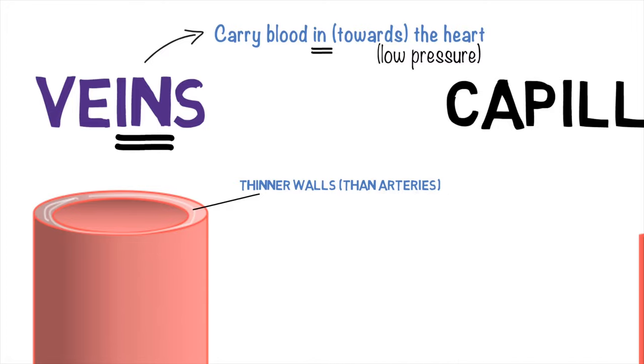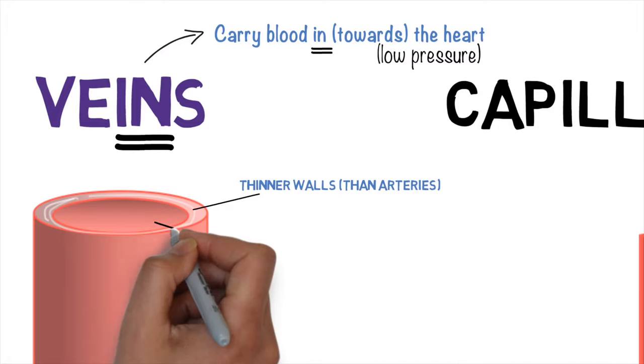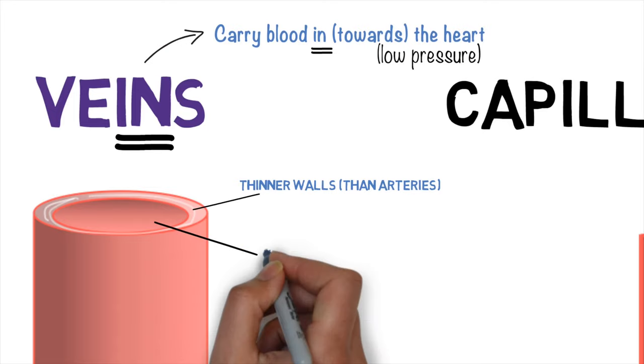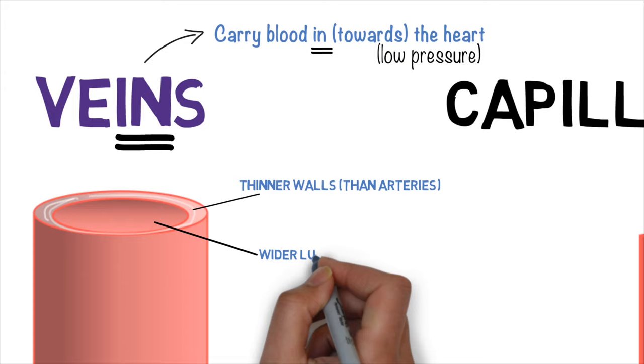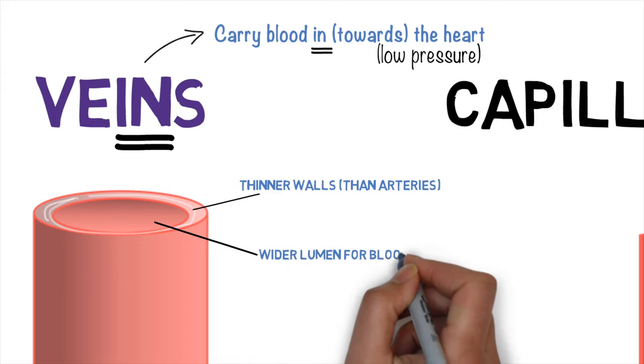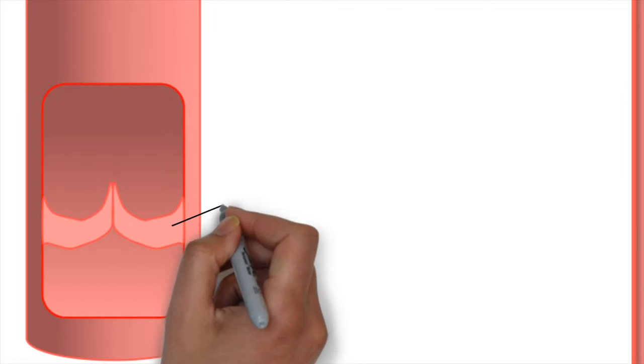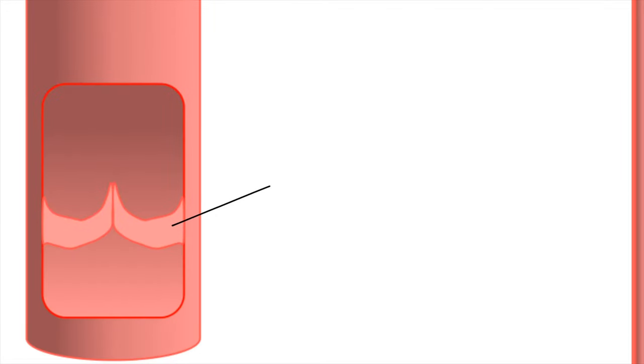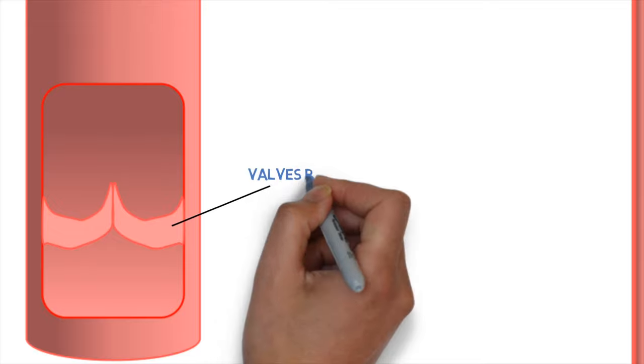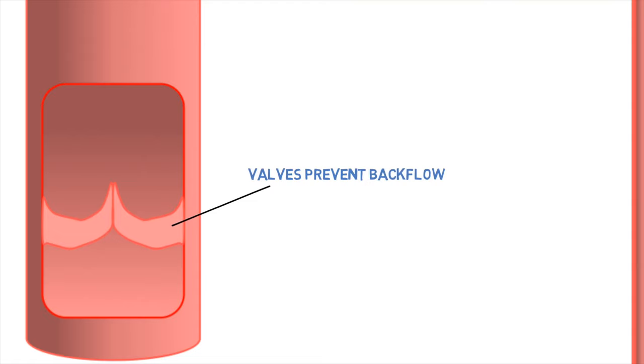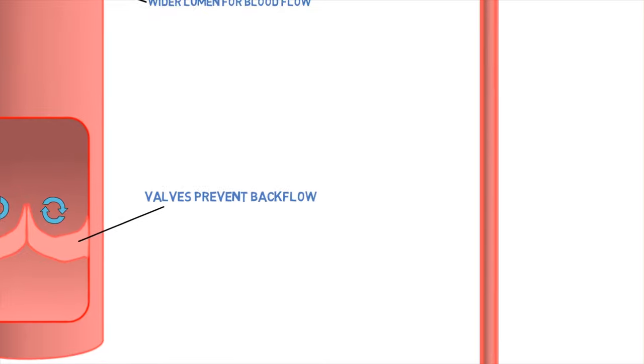And also, because the blood's under less pressure, there are actually structures which stop the blood from flowing backwards. So they've got thinner walls, they've got a wider lumen for the blood flow. But then they have these structures over here called valves. And the blood goes in one direction because there are valves present, and they prevent backflow. So the blood gets pumped in one direction, and as the blood tries to drop back down, it shuts the valves.